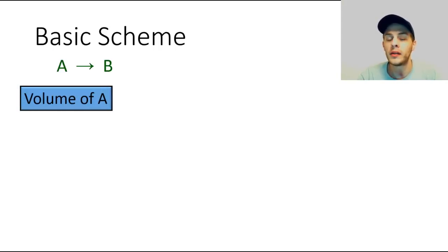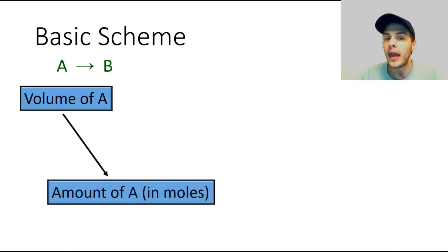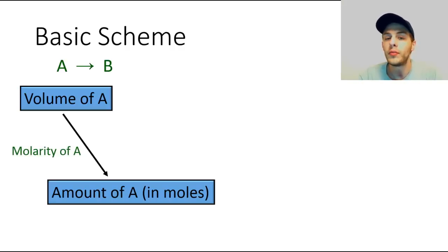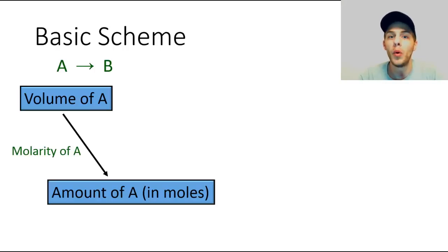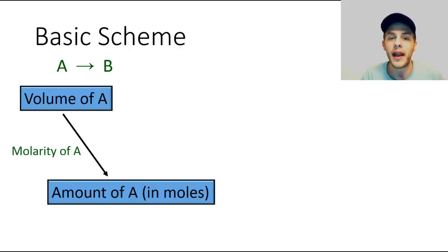We can't go there directly, but we can accomplish it using a three-step conversion process. The first thing we can do is convert from the volume of A to the amount of A in moles, using the molarity of solution A as our conversion factor. The reason we need to convert to moles is because the mole is the unit that is compatible with a balanced chemical equation. A chemical equation doesn't say anything about mass or volume — it tells you how many moles of each reactant you put in and how many moles of each product you get out. So it's necessary to convert to moles.